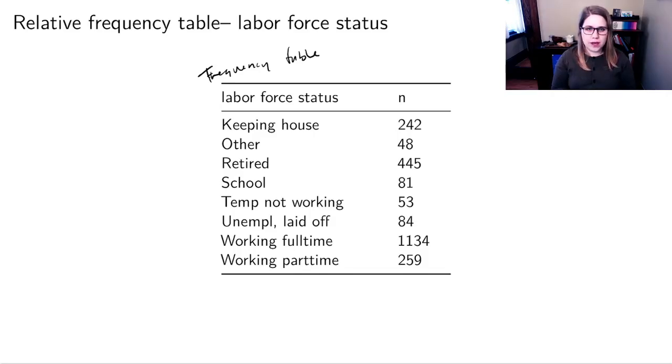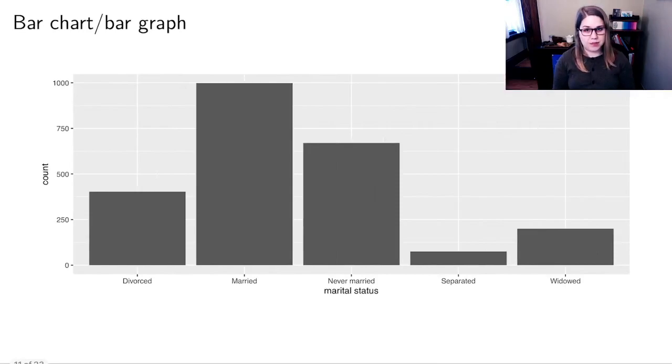So for one categorical variable, those are our numeric kind of summary statistics, either a frequency table or a relative frequency table. And then our data visualizations would be something like a bar chart or a bar graph. Those are two words for the same thing. And this just has a separate bar for each category. And then the height of the bar corresponds to how many people are in that category.